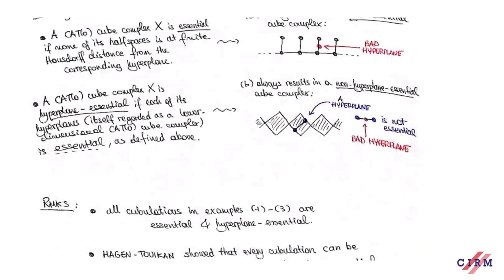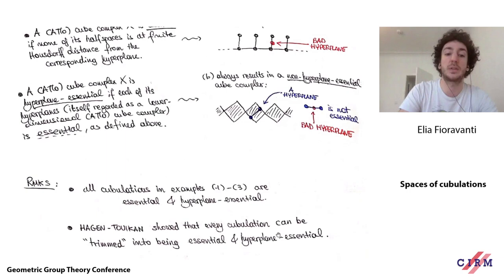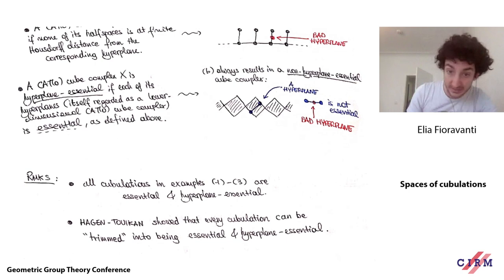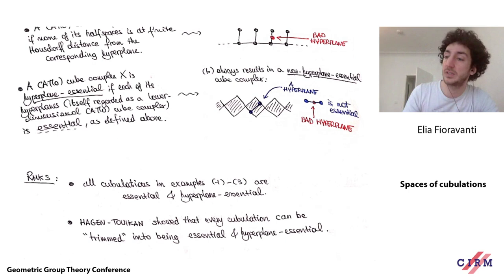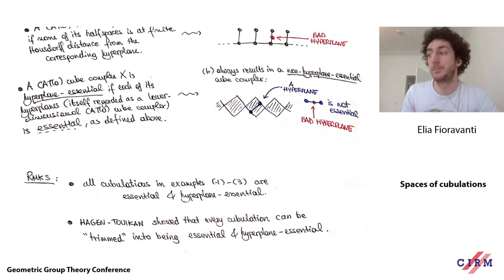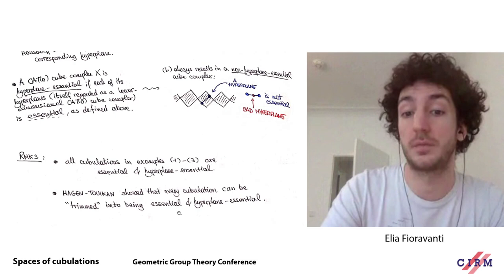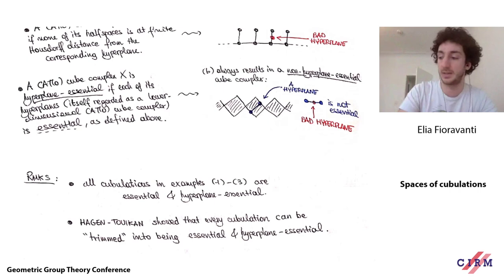It is not restrictive to only look at essential, hyperplane-essential cubulations, because Hagen and Tukia developed a procedure called panel collapse that allows you to start from any cubulation of any group, do some cuttings, and end up with a cubulation that is essential and hyperplane-essential. This procedure changes many properties of the original cubulation but retains some. Importantly, every cubulated group actually has essential and hyperplane-essential cubulations. So if we only look at these, it's not going to be a smaller class than the class of cubulated groups — they are a good candidate for the space of cubulations.